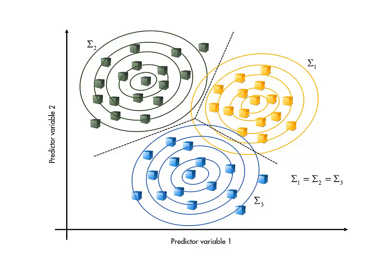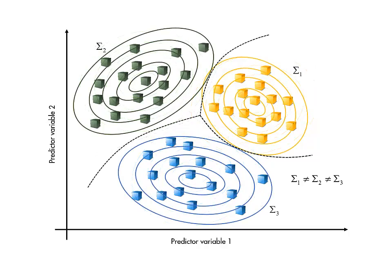However, linear boundaries are not appropriate for all problems. If we do not assume that the covariance matrices are the same for all classes, the boundaries turn out to be quadratic, and again the coefficients are determined by the mean vectors and covariance matrices of the observed classes.